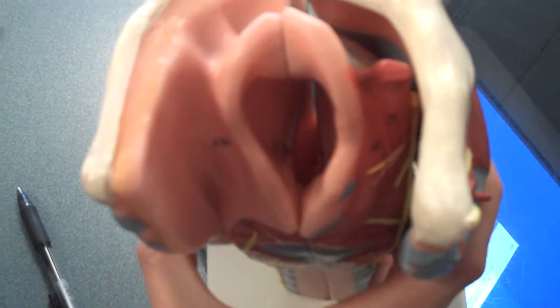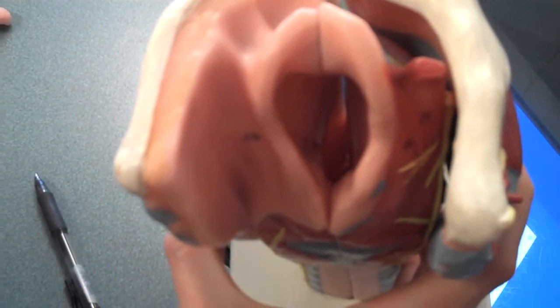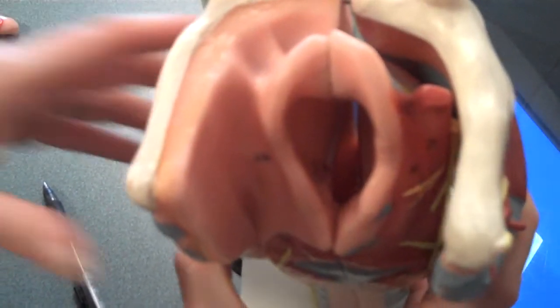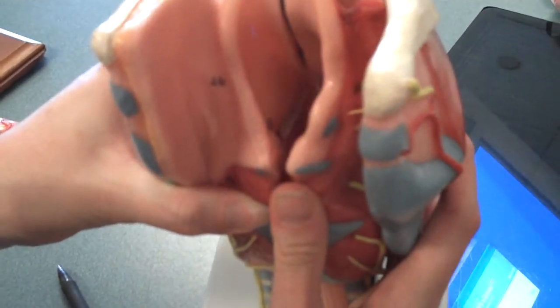The vocal cords plus the space in the middle are called the glottis, so that is the literal airway. As the air is moving through the glottis and passing those vocal cords, that is going to create sound.